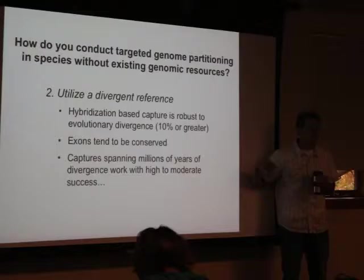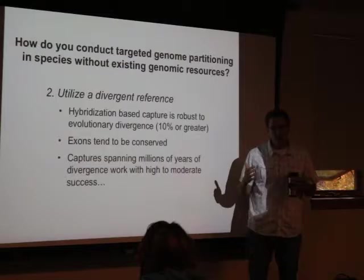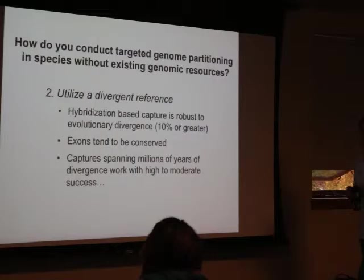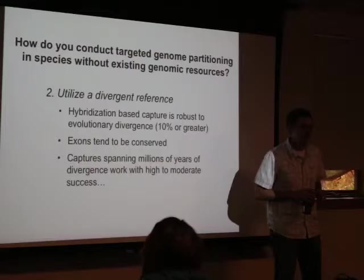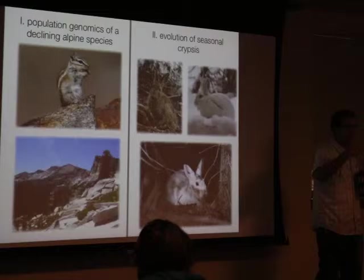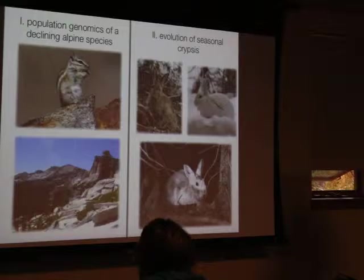One limitation of capture is that you have to build the reference ahead of time — it requires an extra step and added cost. Increasingly, you can also utilize a divergent reference. We know from hybridization principles that capture should be robust to evolutionary sequence divergence of 10% or greater. Because the probes are long, they'll bind the DNA and pull it in. Exons tend to be conserved, so targeting exons you can go quite a bit deeper. Captures spanning millions of years of divergence work with high to moderate success — you could probably capture any mammal based on existing mammal genome resources.